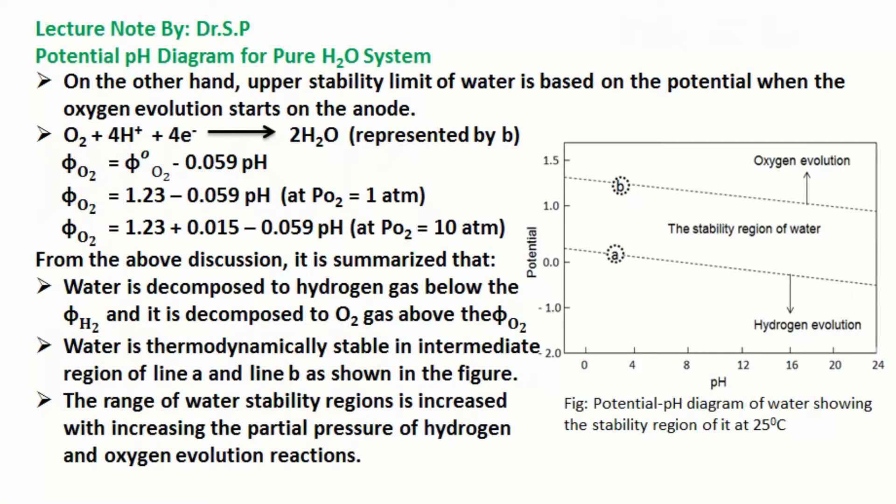On the other hand, upper stability limit of water is based on the potential when the oxygen evolution starts on the anode, represented by B in the figure.